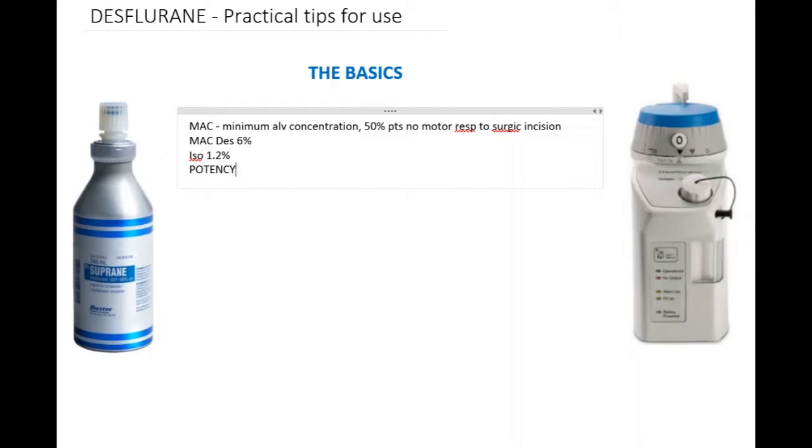Another thing we need to know about though is the blood gas partition coefficient, and this is where Desflurane wins. The blood gas partition coefficient is a measure of the solubility of the agent. It's a measure of the ratio of the dissolved agent versus the free agent in the blood. Desflurane is relatively insoluble with a blood gas partition coefficient of 0.42. Compare that to Isoflurane with a blood gas partition coefficient of 1.4.